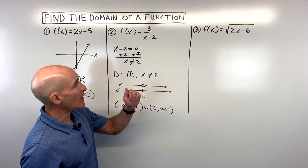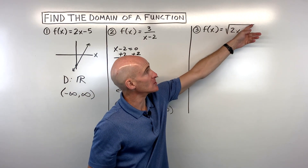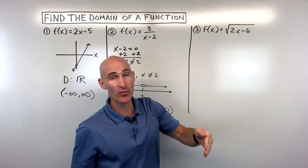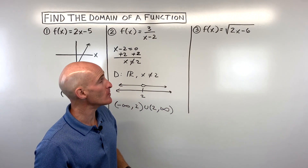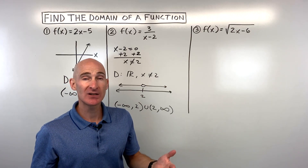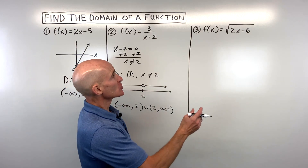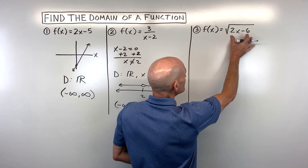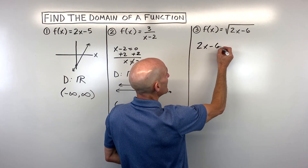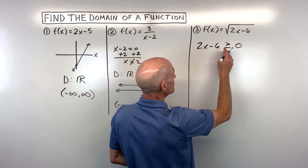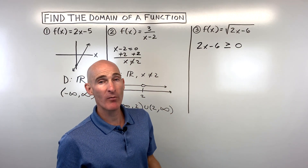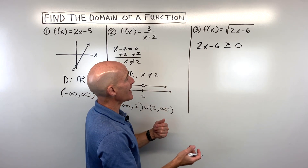Let's take a look at number three. This one has a square root — or you can think of it as an even root. If it's a square root, fourth root, sixth root, or eighth root — an even root — we can't take the even root of a negative number, otherwise we get imaginary numbers. So whatever's underneath the even root, I like to make an inequality and say that it has to be greater than or equal to zero, meaning zero or positive. Square root of zero is zero, square root of a positive number we can do.